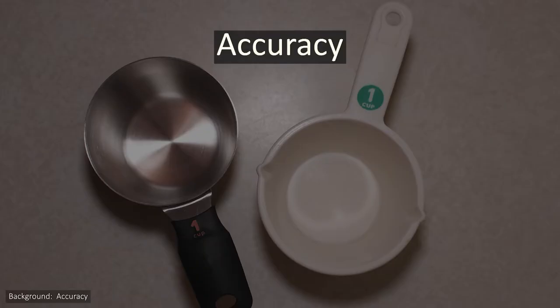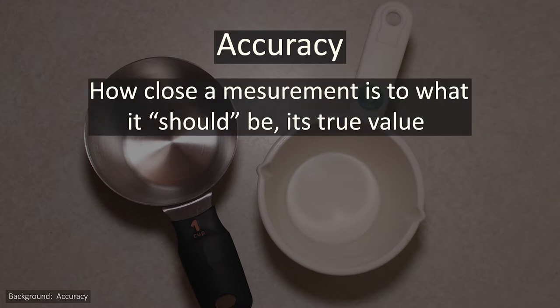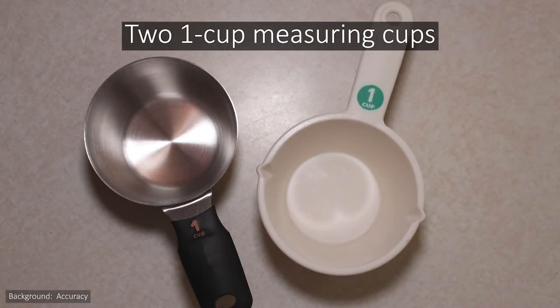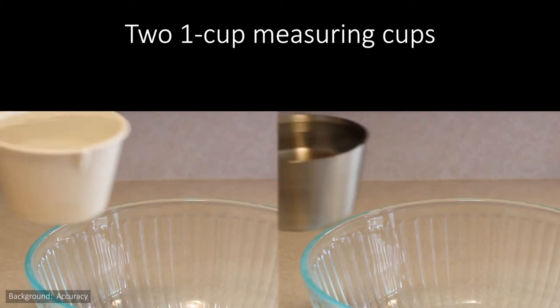So what does the term accuracy really mean? In this course, accuracy means how close a measurement is to its actual, or true, value. For example, let's say you had two different one cup measuring cups and you used each one to measure out a cup of water.